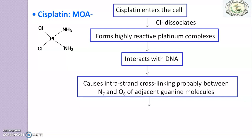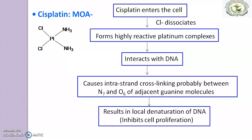Due to this interaction, it causes intrastrand cross-linking, probably between N7 and O6 of adjacent Guanine molecules. Due to which, it reverses local denaturation of DNA, resulting in inhibition of cell proliferation. This is the Mechanism of Action of Cisplatin.